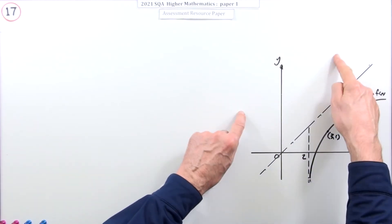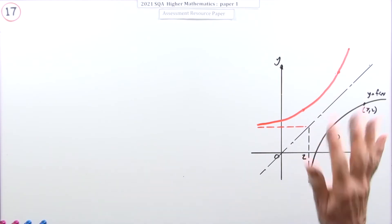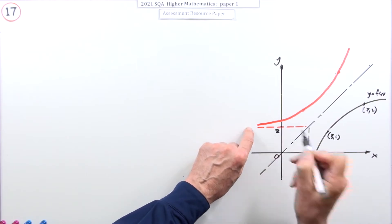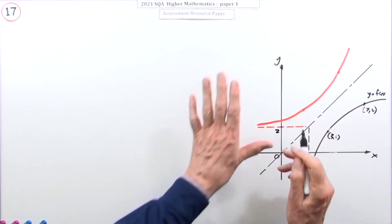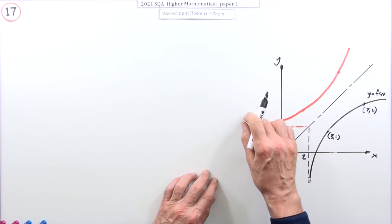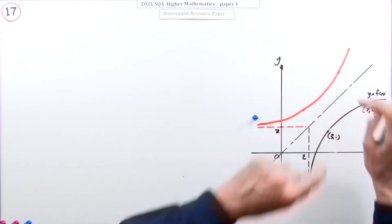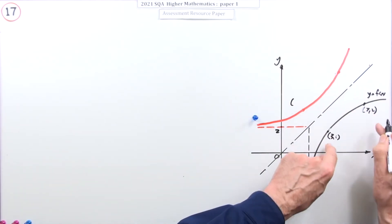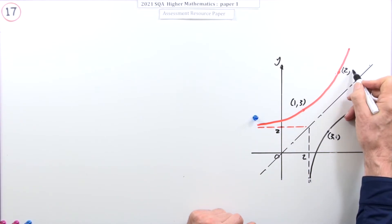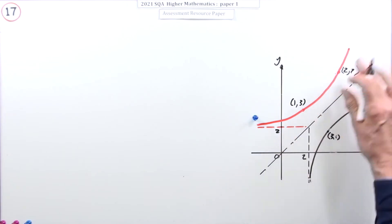Flipping the graph gives you the inverse. Put the figures in and you get the two marks. If the original cut the x-axis at two, that asymptote will now cut the y-axis at two. Make sure you show that in the second quadrant the graph approaches the line y equals two - that was worth a mark. The other mark is for getting it correct in the first quadrant. The coordinates just reverse: if that was (3, 1) it becomes (1, 3); if that was (7, 2) it becomes (2, 7).